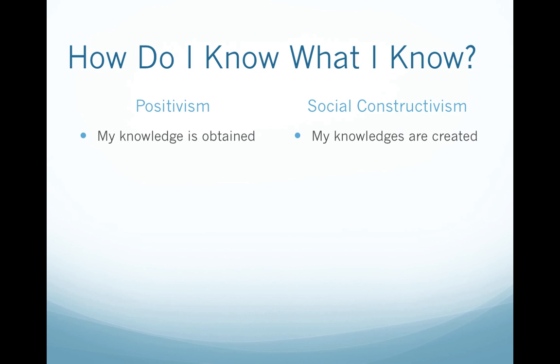So how do I know what I know? This is that epistemological question that the book raised in lots of different ways. I'm going to focus on two of the research paradigms: positivism and social constructivism. I want to highlight here that the language they would use would be different right from the get-go. Positivism would say my knowledge is obtained — I get knowledge from somewhere — while social constructivists would say something more like my knowledges are created. So right there you can start to see the difference between the worldview and the paradigm that informs these positions.